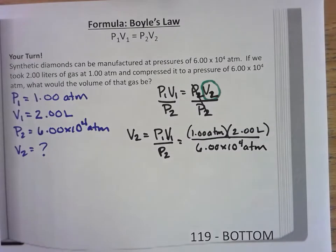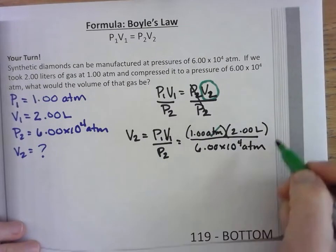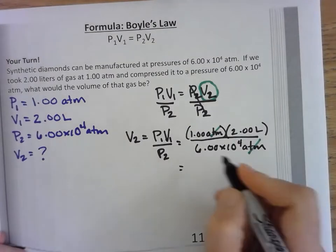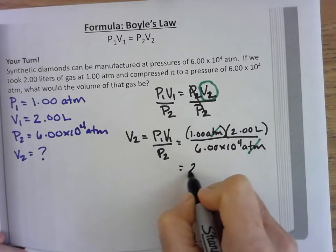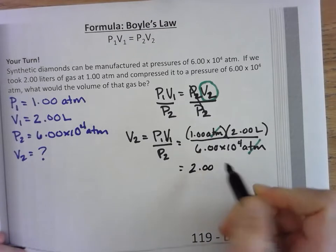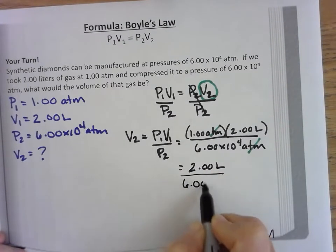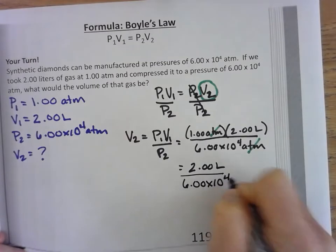I'm going to cancel out my atmospheres. Now, you don't have to do this intermediate step, but I'm just going to show this would be multiplied. So it would be 2 liters, because the liters is not canceled, over this number, which no longer has a unit.